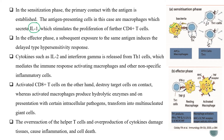In the effector phase, subsequent exposure to the same antigen induces the delayed type hypersensitivity response via memory T helper cells. Cytokines such as interleukin-2 and interferon-gamma are released from TH1 cells, which activate macrophages and other non-specific inflammatory cells as well as cytotoxic T lymphocytes.